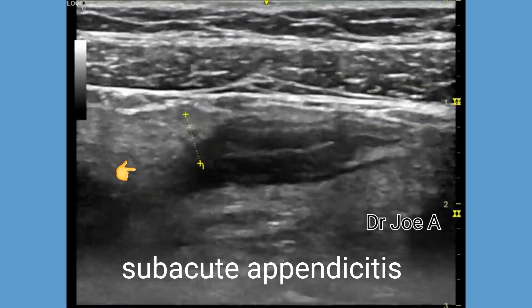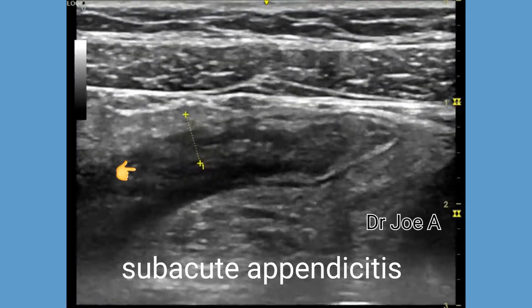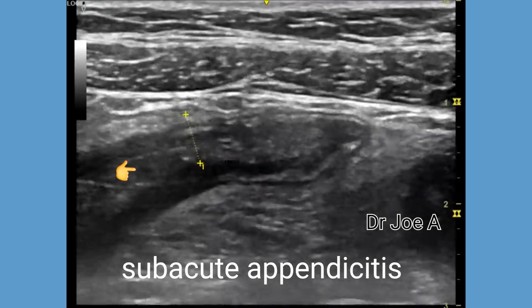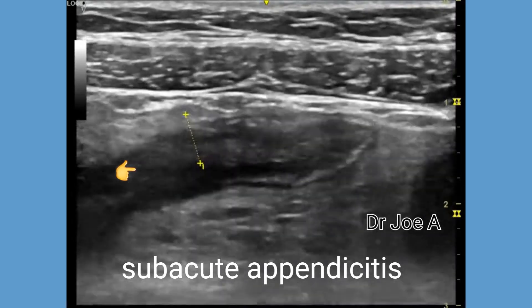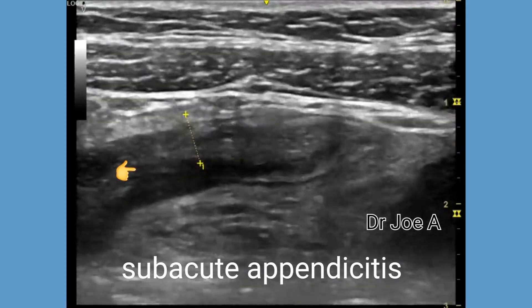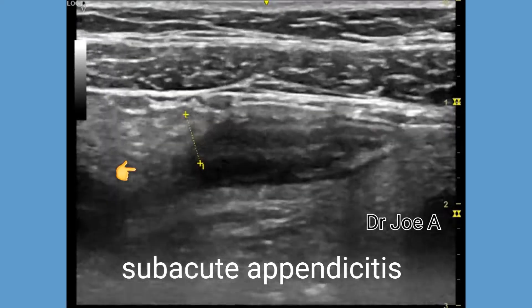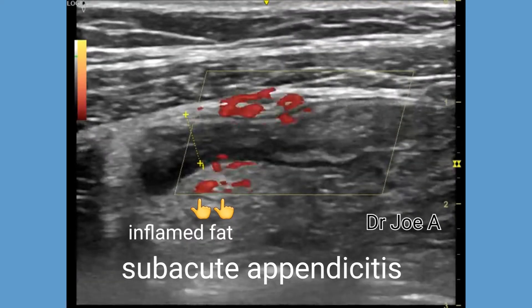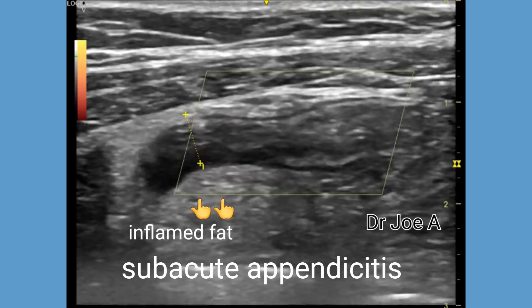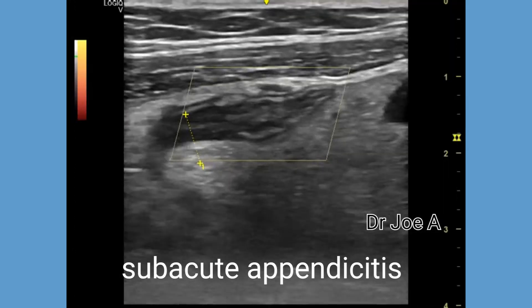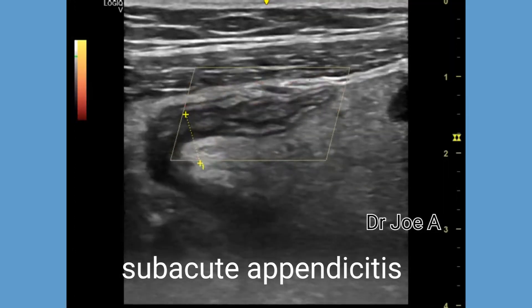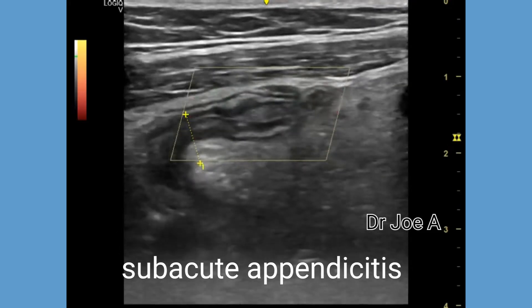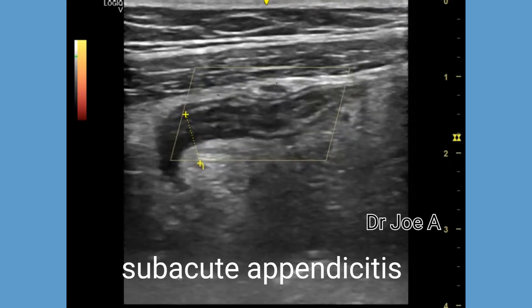This is a case of sub-acute appendicitis in a child. The appendix appears swollen and edematous with a diameter of more than 5 mm. Power Doppler shows minimal increase in vascularity, which further confirms the sub-acute nature of the appendicitis.